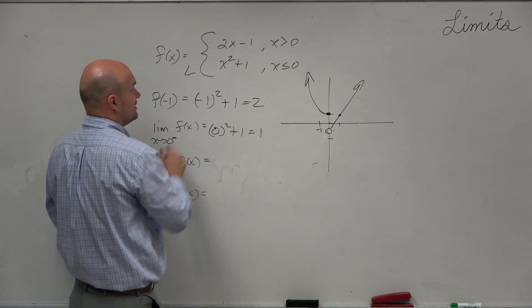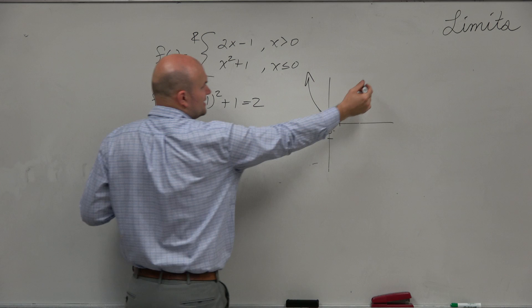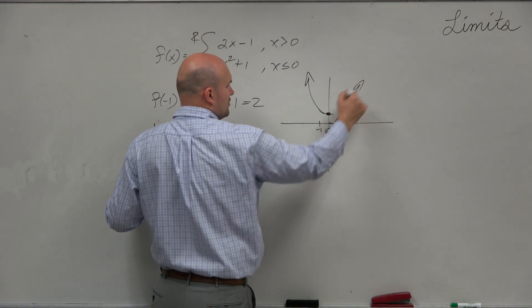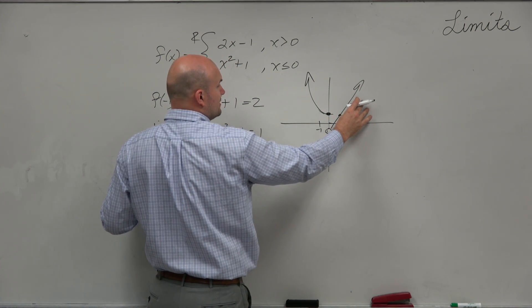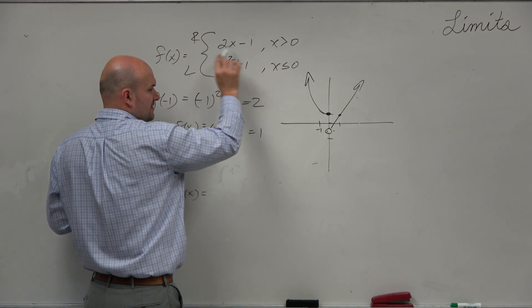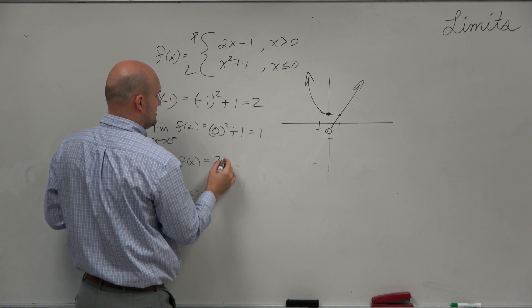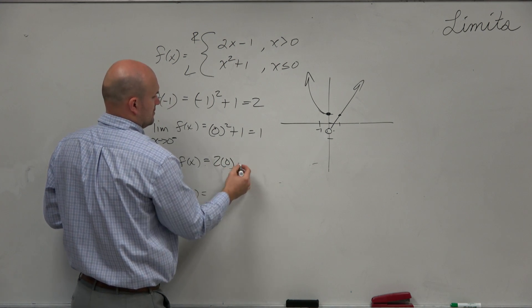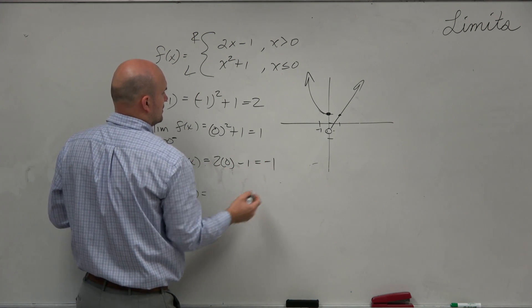And then for the right hand equation, right, you would see if I'm approaching 0 from the right hand, I'm following this function, right? And the reason why is because all values that are greater than 0 are this one. So let's just plug in 0 there equals -1.